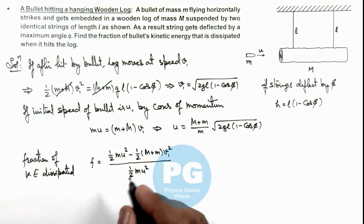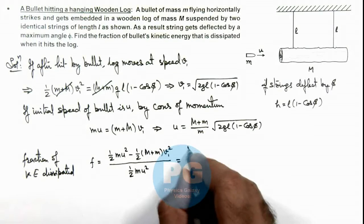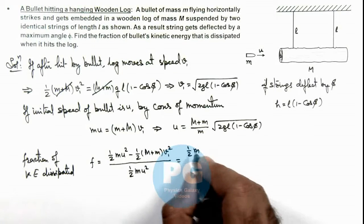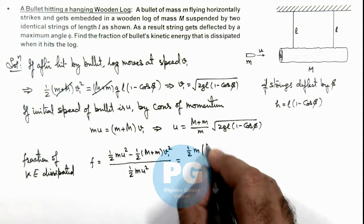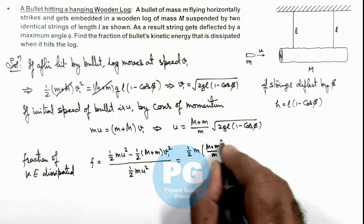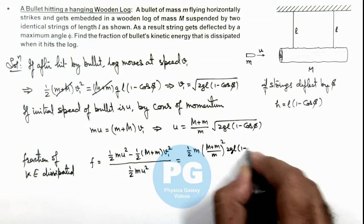So here we can substitute the value of u and v₁. This will be giving us ½m, and here u² we can write as [(m + M)/m]² × 2gl(1 - cos φ).